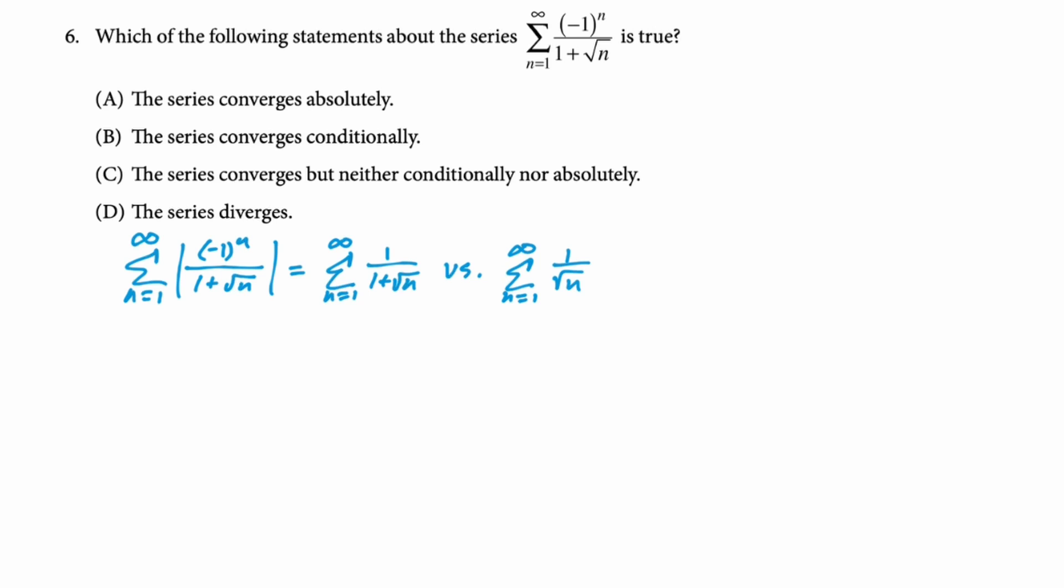If we needed to do work, what I would do is a limit compare with just one over root n, a p series that diverges. So we're going to do the given over the one that we're comparing it to. That's going to give us the limit as n approaches infinity root n over one plus root n. That limit is definitely one, which means both series do the same thing. And in this case, they diverge. So the absolute value of the terms doesn't give you a convergent series. So it's not absolutely convergent. So now we just have to decide, does this thing converge at all? Really?